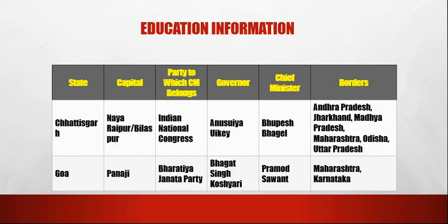The next state is Chhattisgarh. The capital of Chhattisgarh is Naya Raipur, also known as Bilaspur (old name). The party to which the CM belongs is Indian National Congress (INC). The governor is Anusuiya Uikey. The chief minister is Bhupesh Baghel. The borders are Andhra Pradesh, Jharkhand, Madhya Pradesh, Maharashtra, Odisha and Uttar Pradesh.